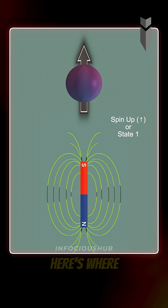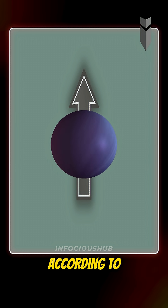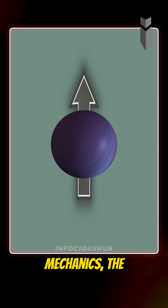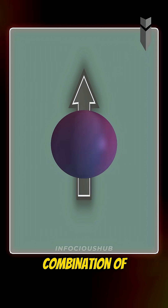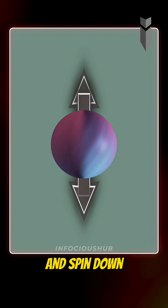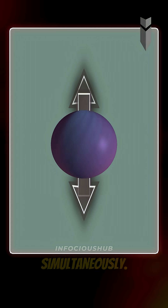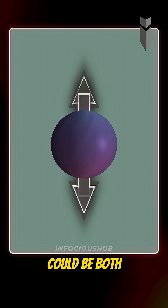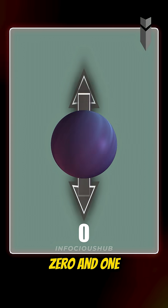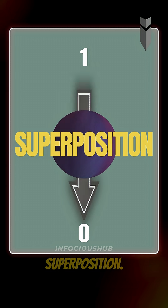Now here's where the quantum magic begins. According to quantum mechanics, the electron can exist in a combination of both spin up and spin down states simultaneously. In other words, it can be both zero and one at the same time. And that's what we call superposition.